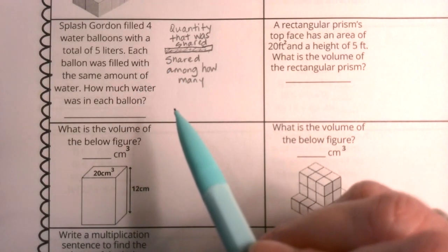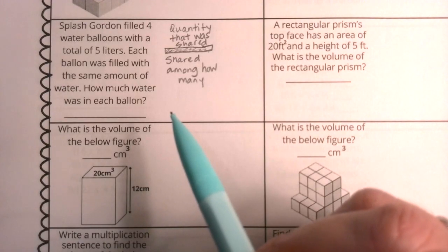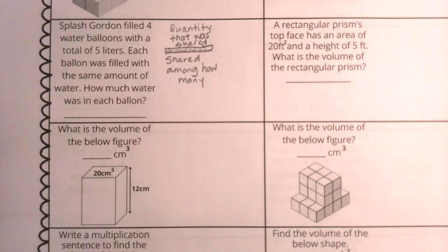The denominator is going to be how many it was shared by. It was shared among how many people, or it was shared into what portion size. That's always what a fraction is going to look like.